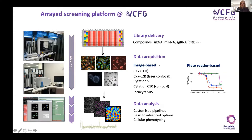For screens — what we call arrayed screening — we work predominantly in a 384-well format. Usually we have controls on the left and right sides of the plates. You've got your agent in the plate and you use a big robot to deliver it into all your daughter plates, which will usually have cells in them if it's a drug, or you may be adding cells at the same time if you're doing RNAi or CRISPR.